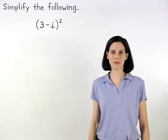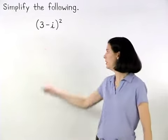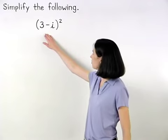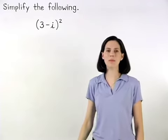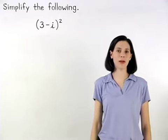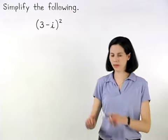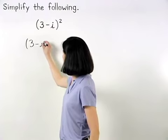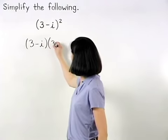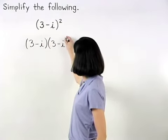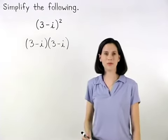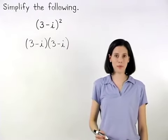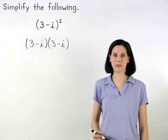In this example we're asked to simplify 3 minus i squared. Remember that 3 minus i squared can be thought of as 3 minus i times 3 minus i. Simplifying from here we use the FOIL method just like we did in the previous example.